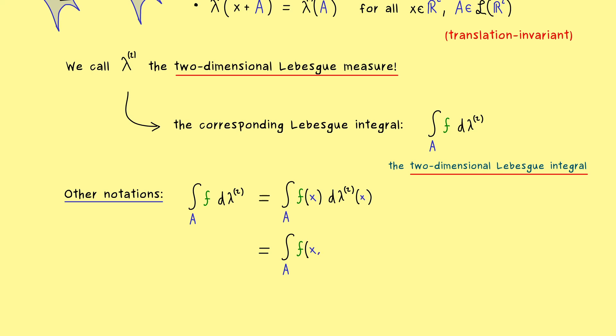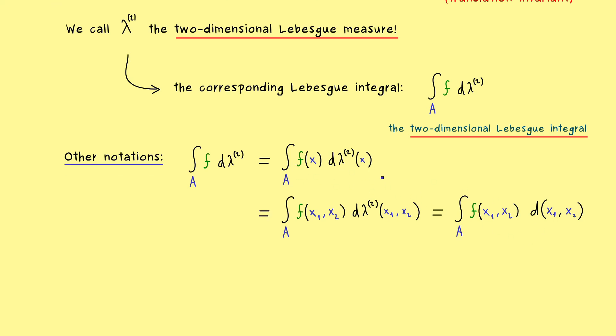Therefore, sometimes it's also useful to denote the two components separately. This does not change anything, it still denotes the same integral. And since it's our standard Lebesgue integral, we often omit the mentioning of lambda altogether. Then we simply write d of x1 x2. But of course, if you don't want to use two variable names, you can also simply write dx.